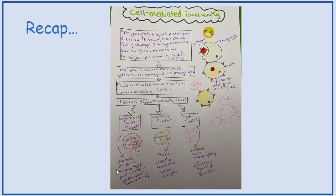These secrete perforin, which perforates or puts holes in the pathogen's membranes. Memory T-cells stay in the blood and remember the same antigen again. And helper T-cells attract more phagocytes and enlist the help of B-cells.